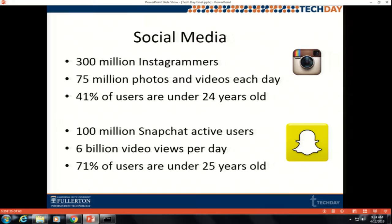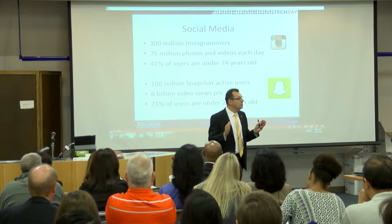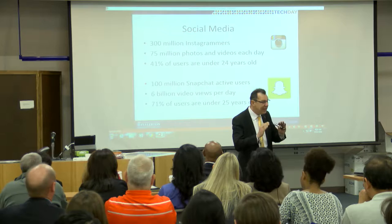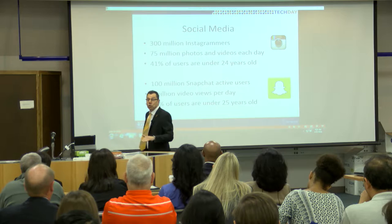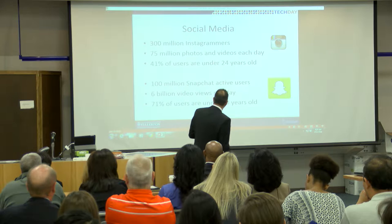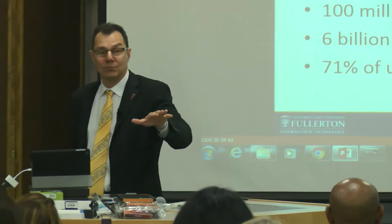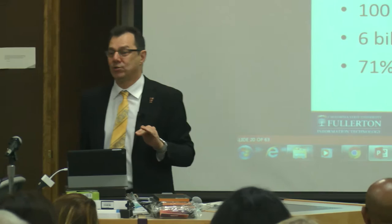Facebook is always up there, but I really don't put out Facebook much because I think Facebook is for old people — the average age is 40. If you're using Facebook, you're old. Just say you use Instagram — you come down another 16 years, from 40 to 24. There are 300 million Instagrammers, 75 million photos and views per day. In Snapchat there are 100 million users — almost every one of your kids uses Snapchat — and there are 6 billion videos per day on Snapchat. So you're talking about big data, right? Social media.